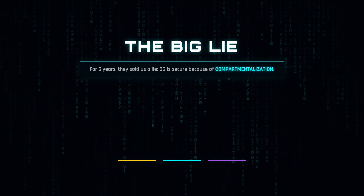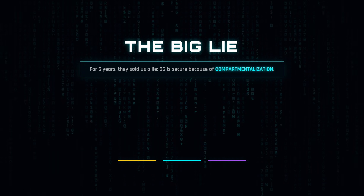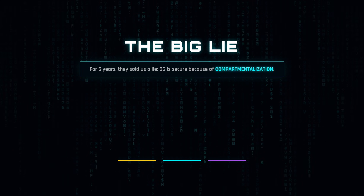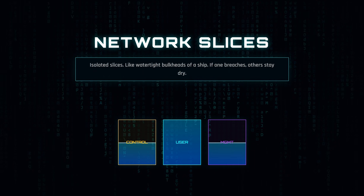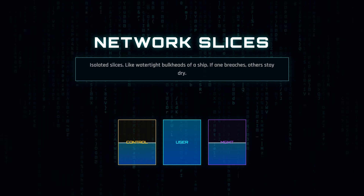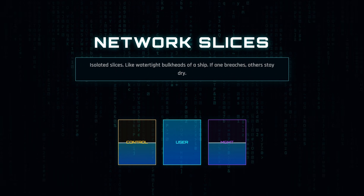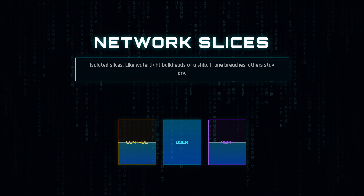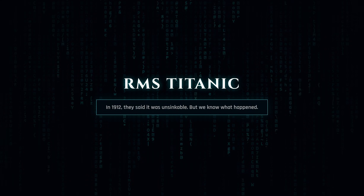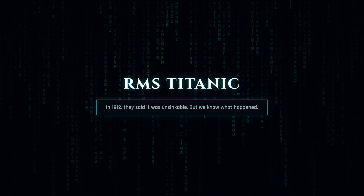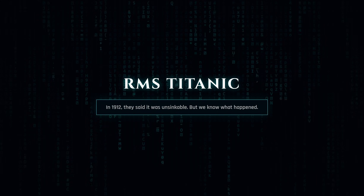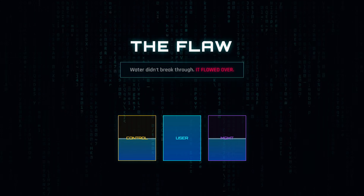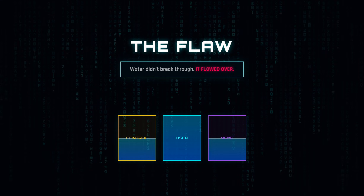They told us that 5G is fundamentally secure because it uses something called compartmentalization. They told us that the network is split into isolated slices — control plane, user plane, management plane — and that these slices are like the watertight bulkheads of a ship. If one gets breached, the others stay dry. Does that sound familiar? It should, because in 1912, shipbuilders said the exact same thing about the RMS Titanic. They said it was unsinkable. But we all know what happened. The water didn't break through the bulkheads — it flowed over them.